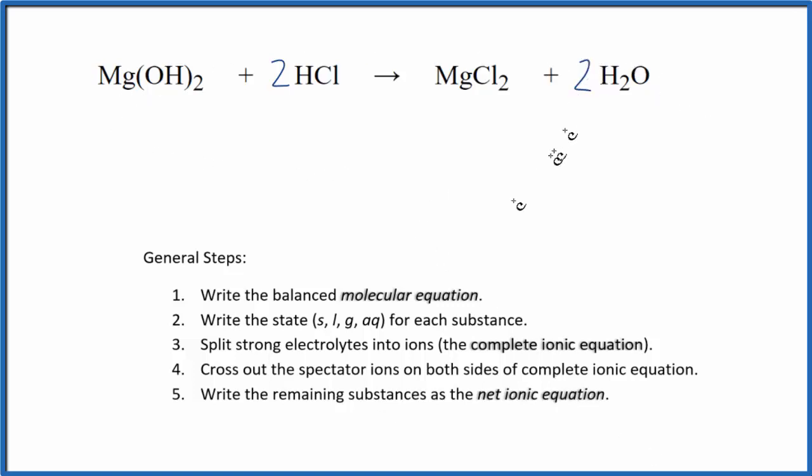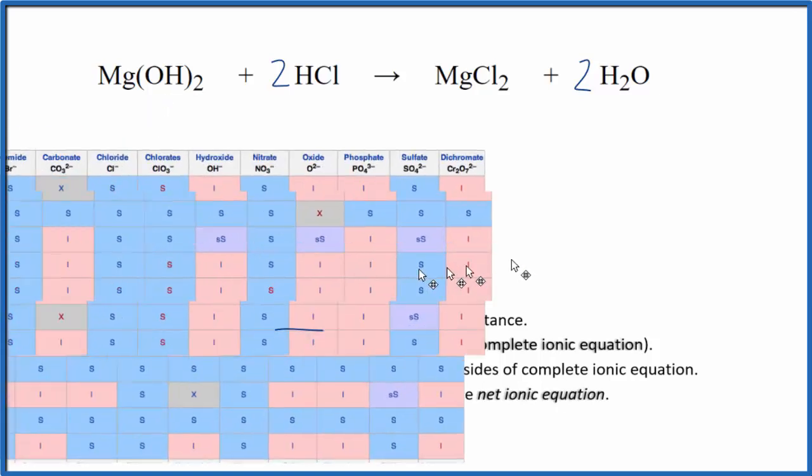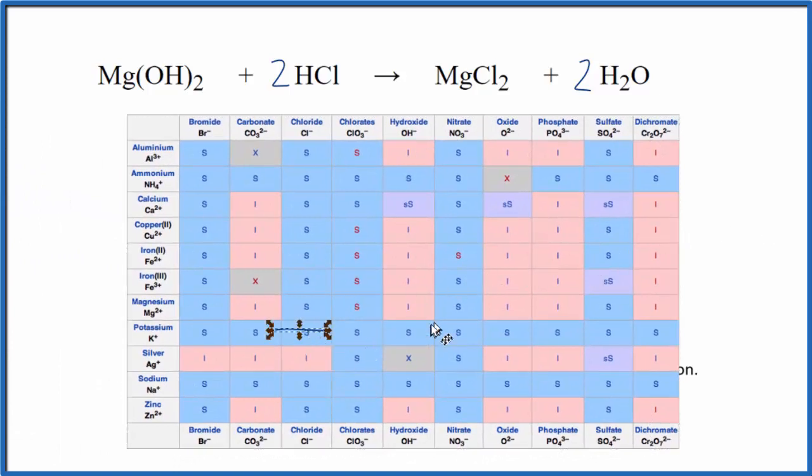Once we've done that, then we need to write the state for each of these substances here. So magnesium hydroxide - hydroxides often aren't soluble in water, so we should check to make sure whether it's soluble in water on a solubility table. So we look at our solubility table here, we find magnesium, and then across the top, the negative ions, hydroxide.